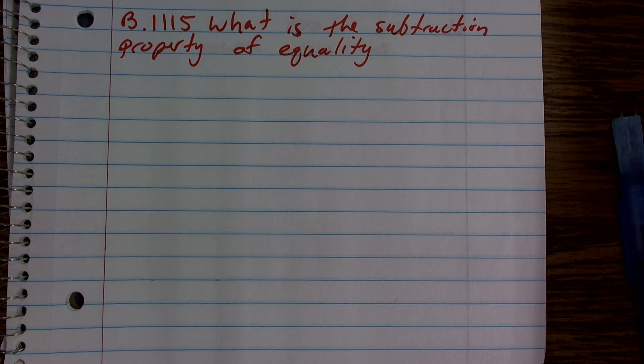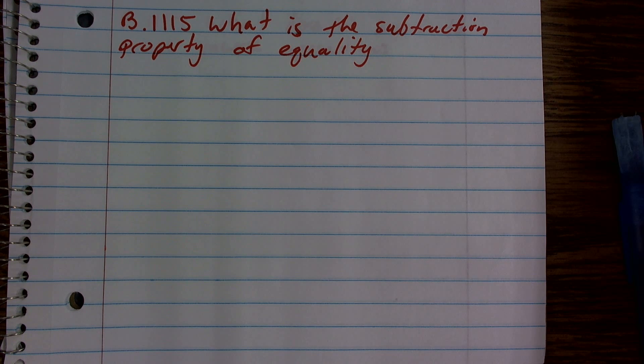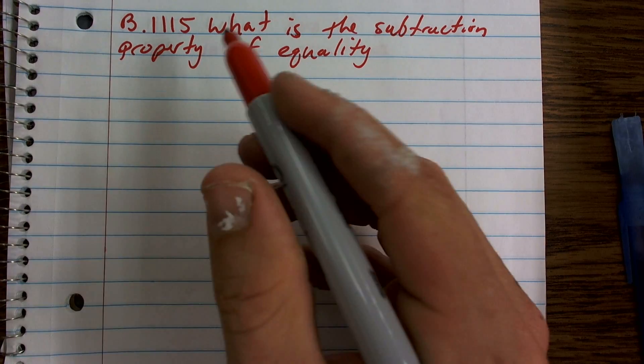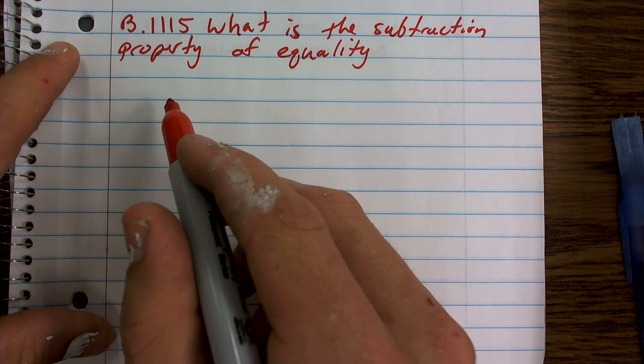The subtraction property of equality states that subtracting the same number from each side of an equation produces an equivalent equation. Let's take a look at it with just a basic equation here.